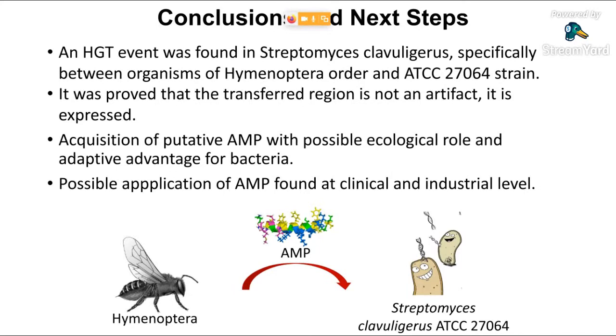Considering our results, we conclude that an HGT event was found in Streptomyces clavuligerus, specifically between organisms of the Hymenoptera order and ATCC 27064 strain, and it was proved that the transferred region is not an artifact and is expressed. The acquisition of the putative AMP with possible ecological role and adaptive advantage for bacteria was demonstrated, and we proposed possible applications of the AMP found at clinical and industrial levels.